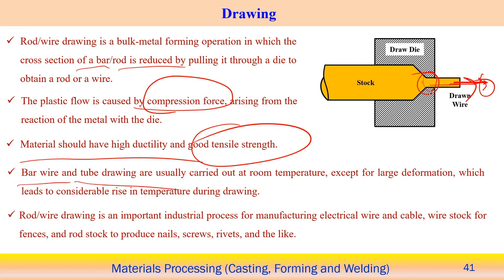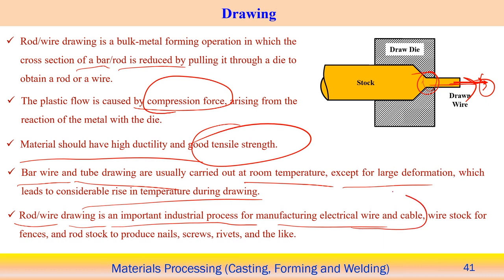Bar, wire, and tube drawing is typically carried out at room temperature, except for large deformations which lead to a rise in temperature during the drawing operation as energy is converted to heat. Rod wire drawing is an important industrial process for manufacturing electrical wire and cable, and can also be used to produce nails, screws, rivets, and similar components.